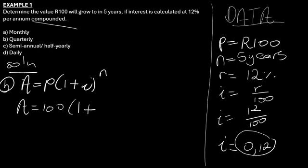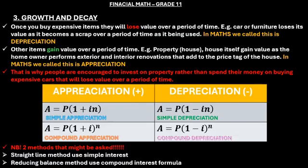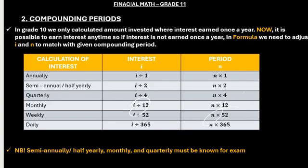0.12, but you need to remember that this is compounded quarterly. So you need to go back to our compound formulas here. Our compound formulas. If you can notice here for quarterly, you divide i by 4 then you multiply n by 4.